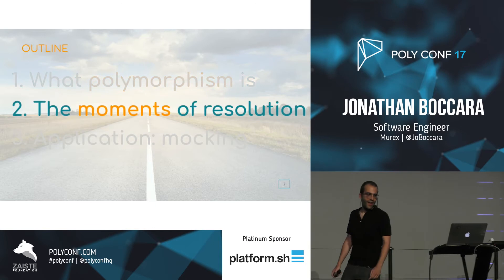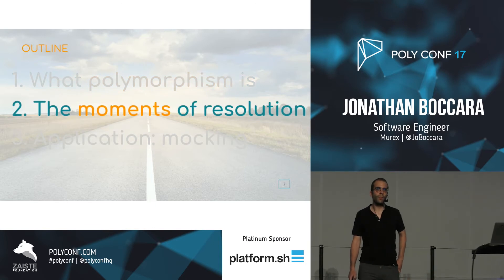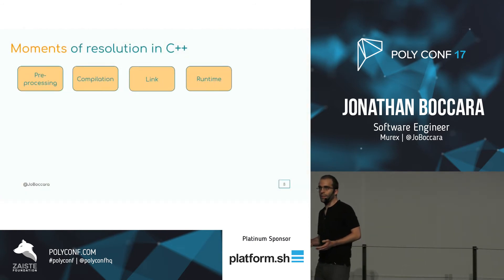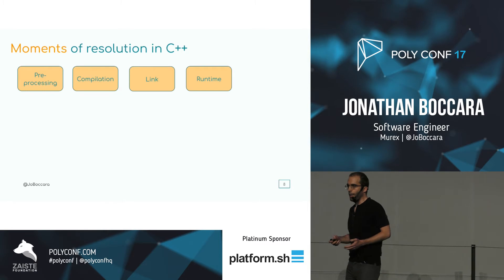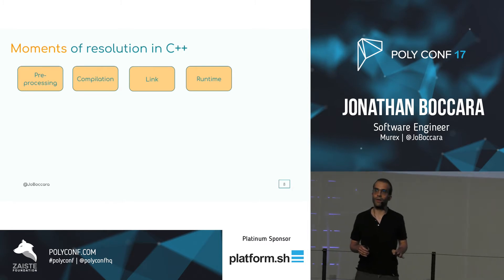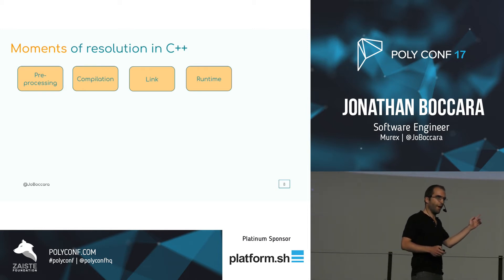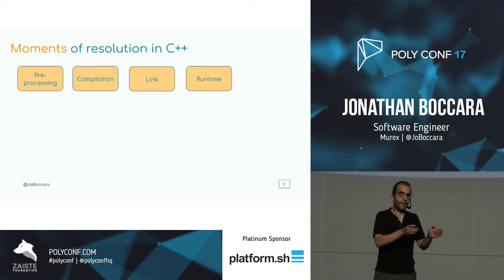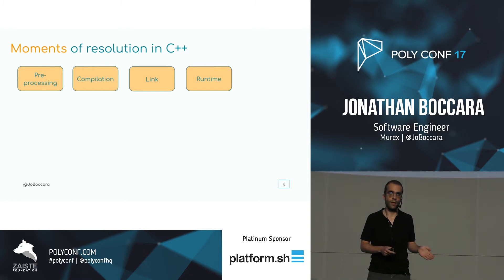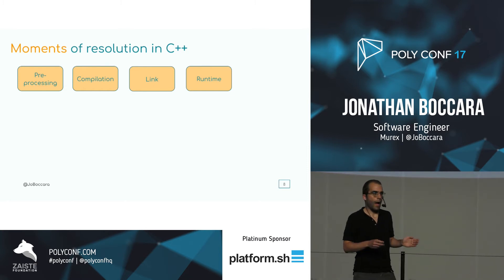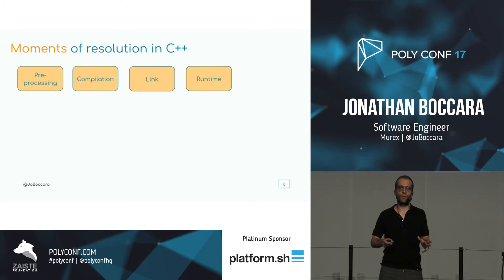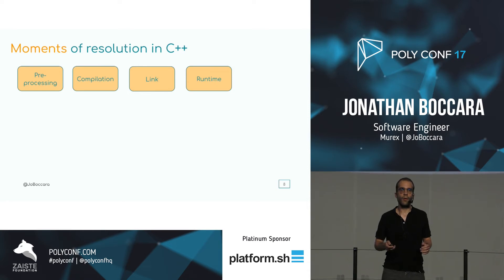Now let's get into the very moment that polymorphism is resolved. I'm going to use C++ for this example because I'm a C++ developer, but there's no prerequisite of C++ whatsoever — I'll explain everything along the way. These four steps are the steps that source code goes through from text to running code on your machine. At every single one of those steps, there is one form of polymorphism.